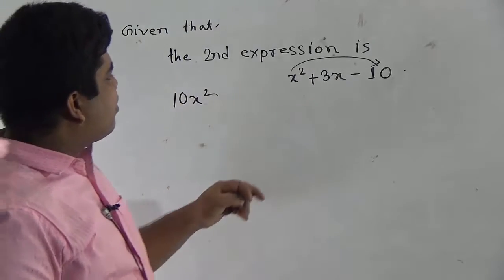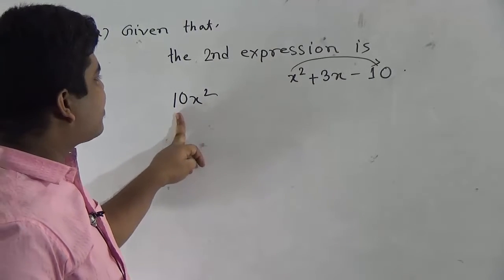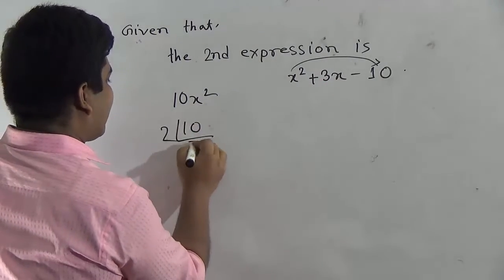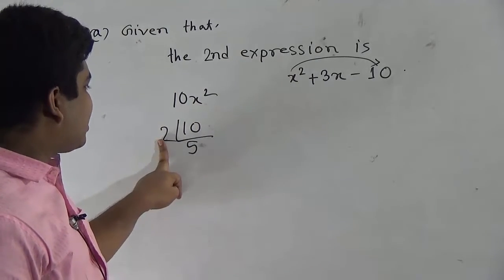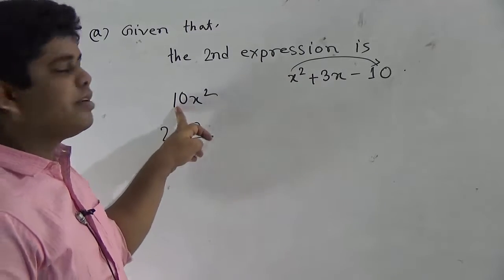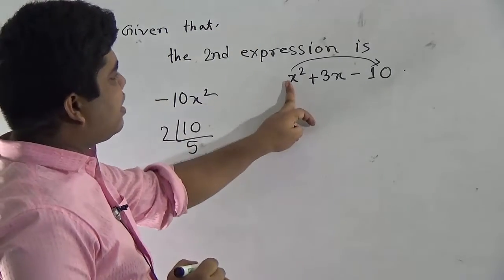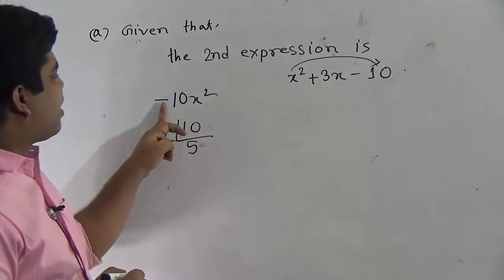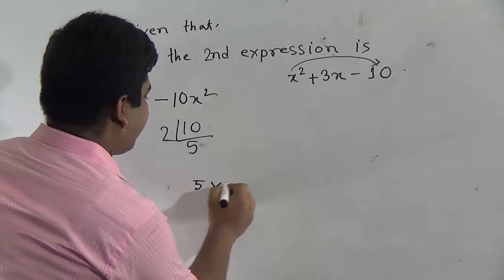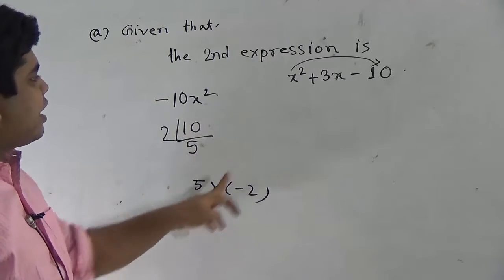Now we break this 10 into two factors such that their subtraction will be 3. Two fives are 10. My dear students, if you subtract 2 from 5, then you get 3. And if you multiply 2 with 5, then you get 10. That is why, if we multiply x squared by minus 10, then it will be minus 10x squared. If we multiply 5 with minus 2 we get minus 10. If we add these two numbers, then we get plus 3.